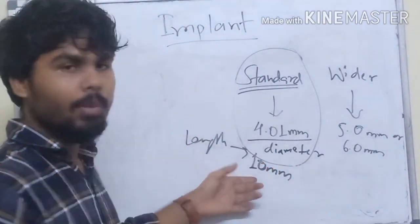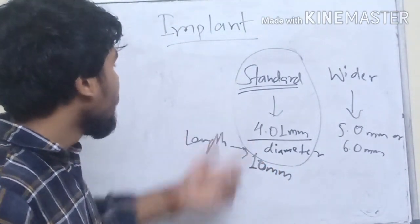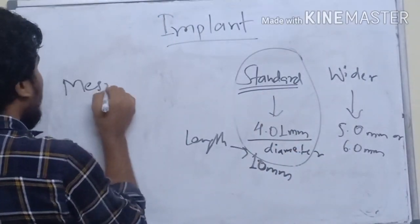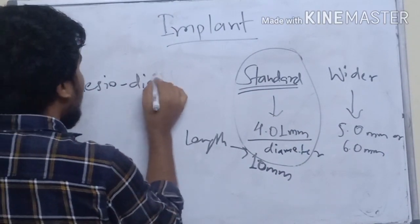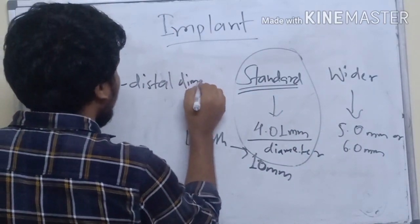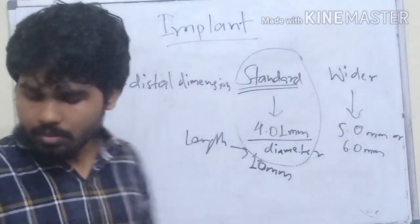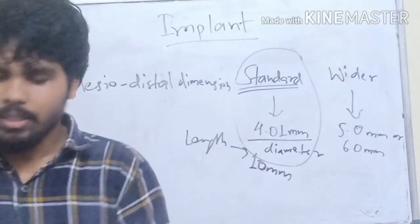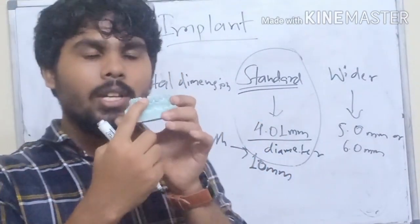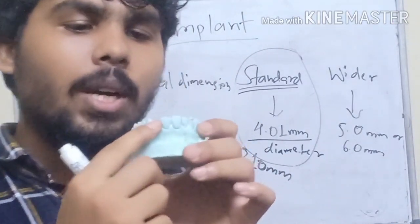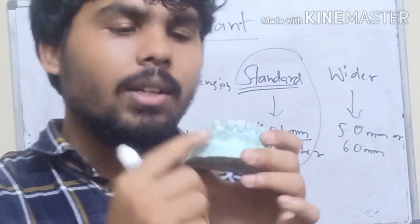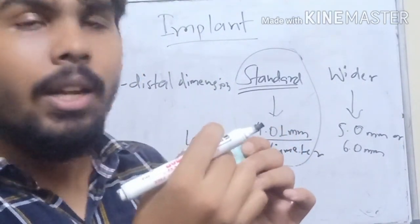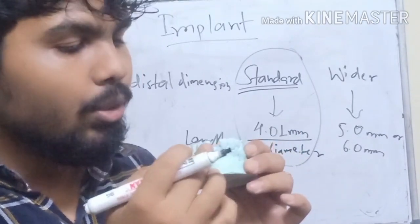The most commonly found implant length is 10 mm. For a standard diameter implant, we should know the mesiodistal dimension required. Suppose there is a missing tooth and we need to place an implant in that area — we should know the space between adjacent teeth and the labiolingual diameter and height of bone available.